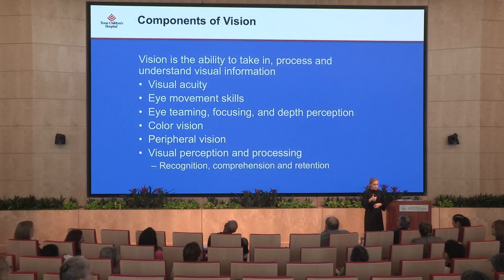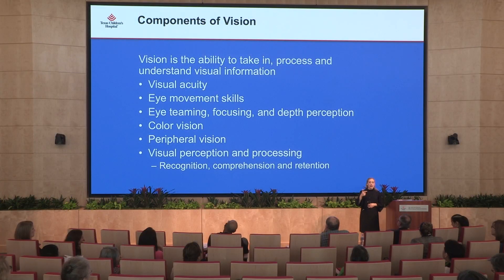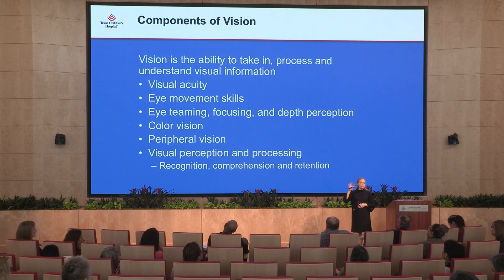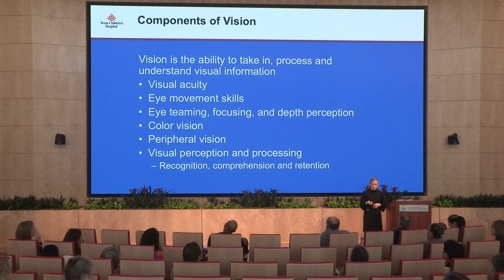First I want to talk about what vision is. When we think about vision, we think about visual acuity, and that is just a quantification of vision. It doesn't tell us much about the quality of vision. Vision is really more a culmination of visual acuity, eye movement, eye teaming skills, depth perception, color vision, visual field, and processing vision in our brain.